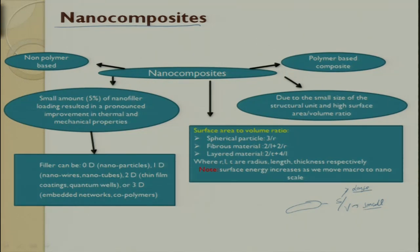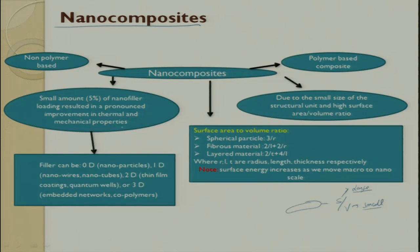For non-polymer based composites, a small amount — just 5% nano filler loading — results in a pronounced improvement in thermal and mechanical properties. Compare this to fiber reinforcement which requires 30-40%, or automated processes needing 60-70%. The filler can be 0D (nanoparticle), 1D (nanowire or nanotube), 2D (thin film or quantum wells), or 3D (embedded network or copolymers). These are the forms of nano materials getting integrated into composites.